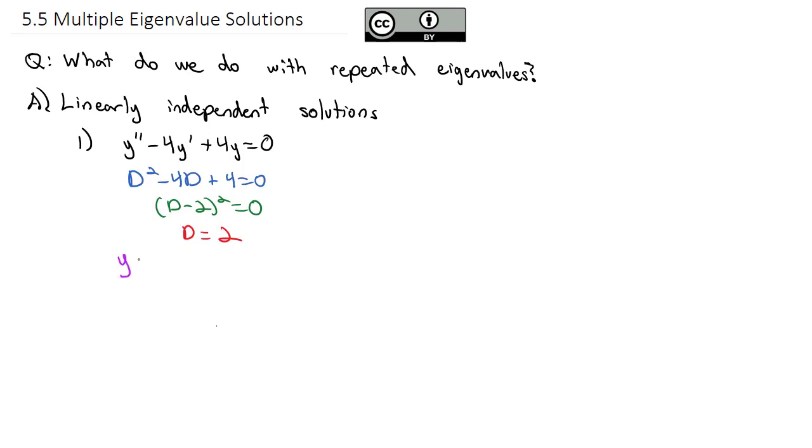Our first solution was c1 times e to the 2t, but we couldn't have another e to the 2t because that would not be linearly independent. So we had to multiply by t e to the 2t to get a linearly independent second solution.